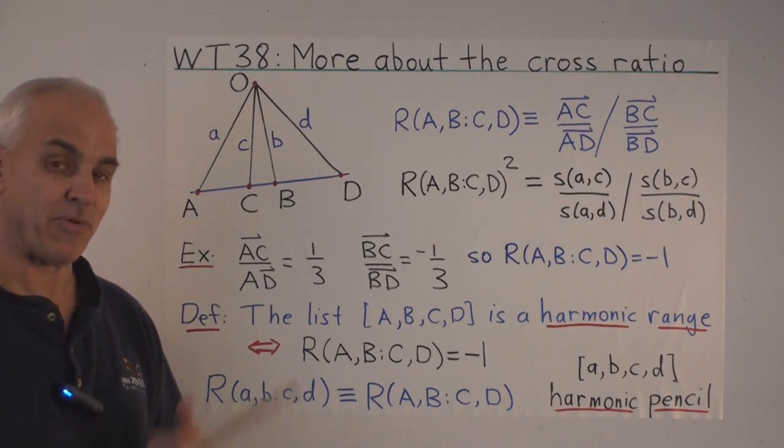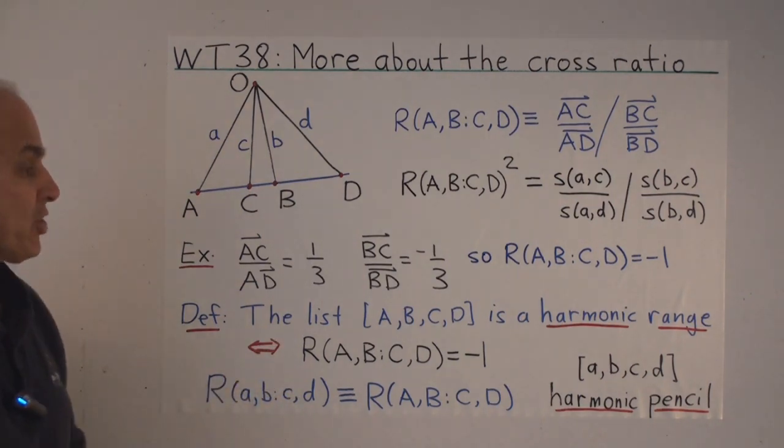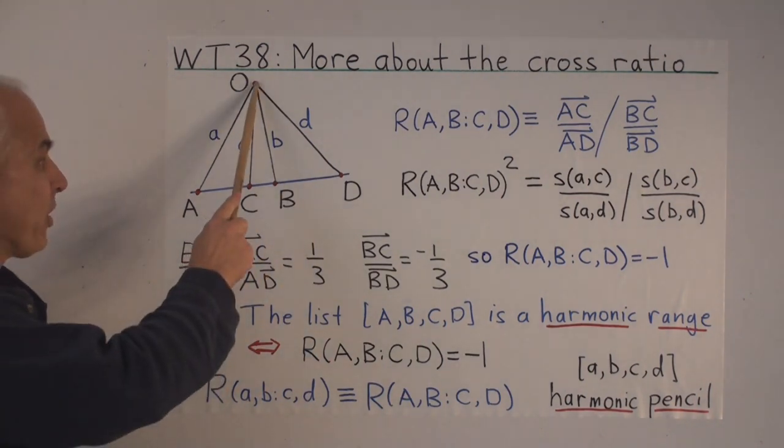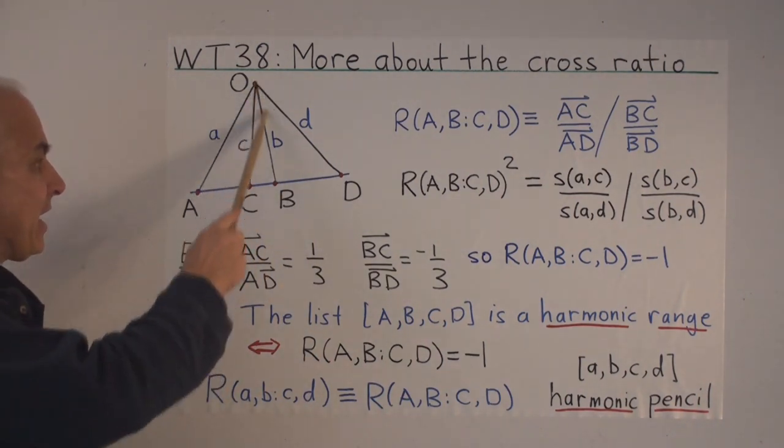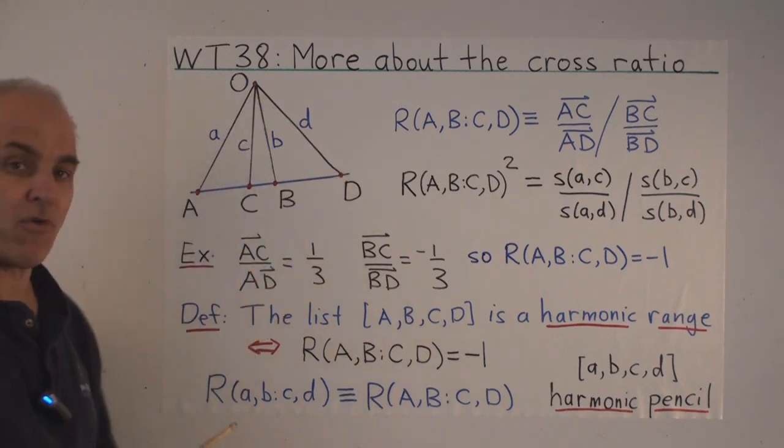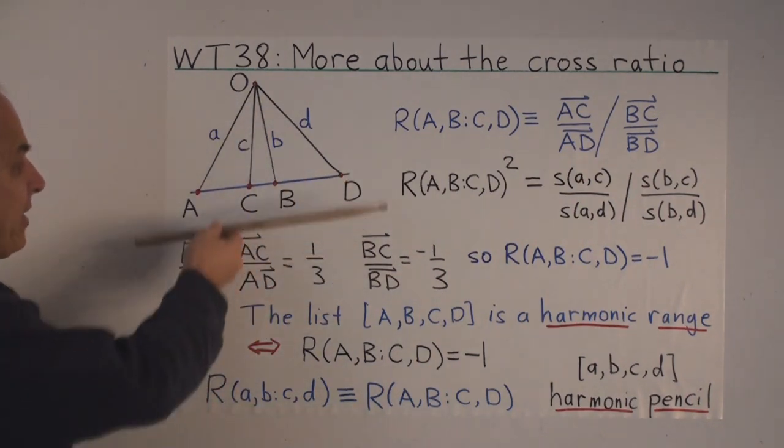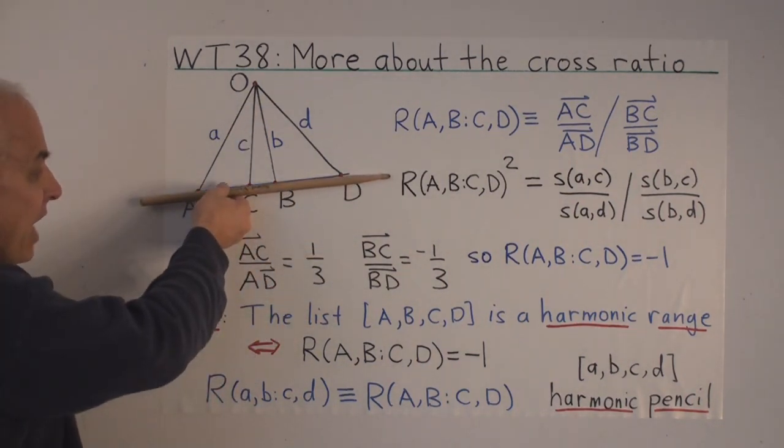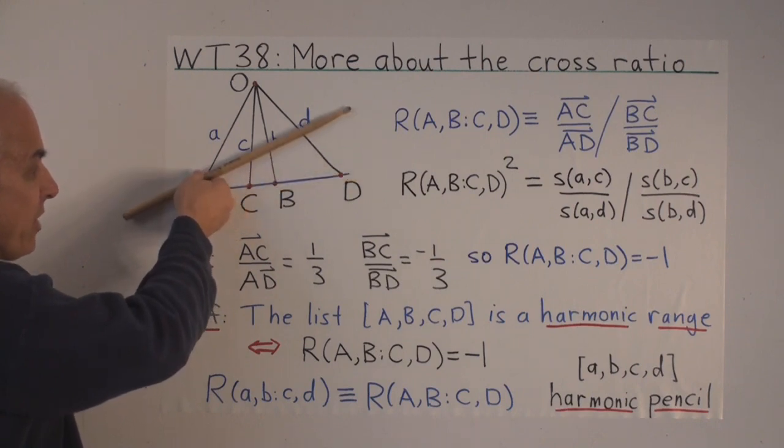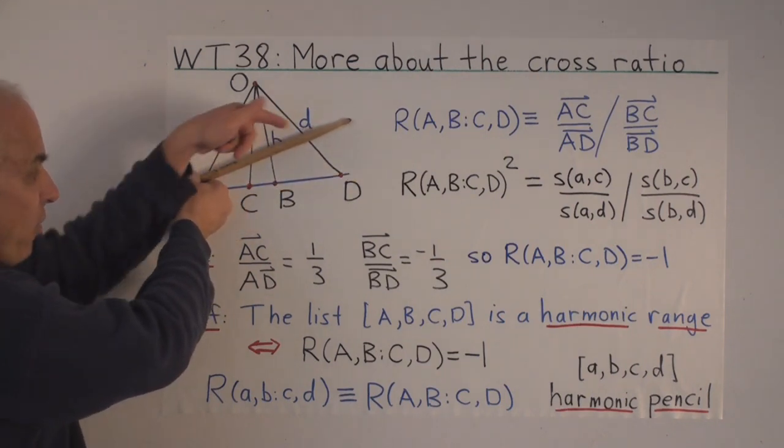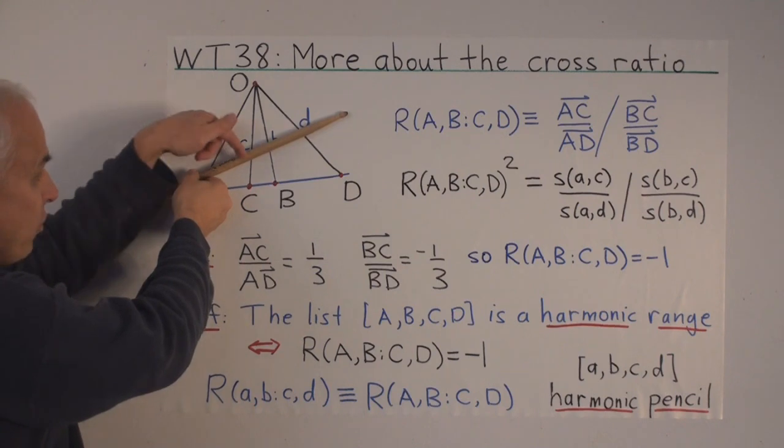Last time we saw that the projective invariance of the cross-ratio could be described the following way. If we have some external point O and lines A, B, C, D to our four points, then the cross-ratio is unchanged if we change this line to another line intersecting these four lines here, in four new points.